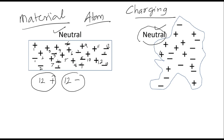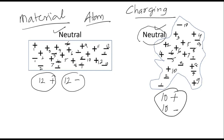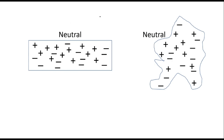So these two materials are neutral in nature because they have the same number of positive as well as negative charges. This is the same with any two objects in nature, until and unless we rub them against each other. Now when we rub both the materials against each other, what happens? Some of the negative charges will move — either from here to there or there to here — depending on the nature of the material.